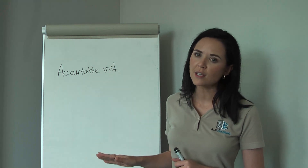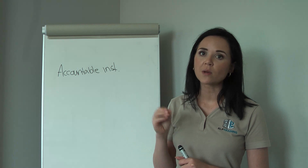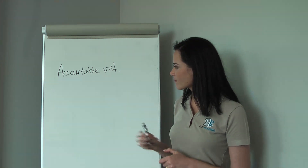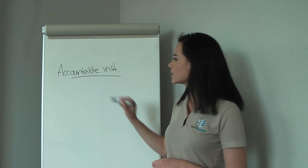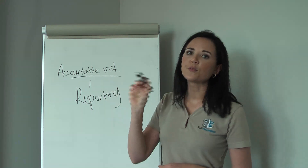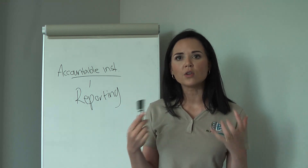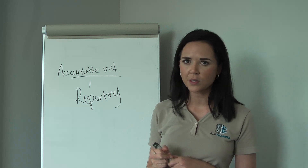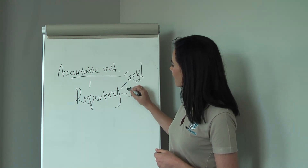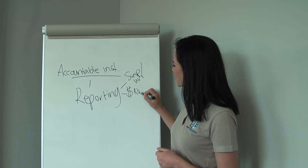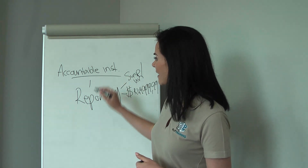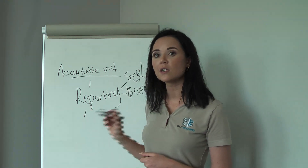Accountable institutions have a reporting duty. Reporting means informing the FIC of any suspicious or unusual transactions, and reporting cash transactions above R49,999.99 — that is, forty-nine thousand nine hundred and ninety-nine rand and ninety-nine cents. That is the first duty of our accountable institution.